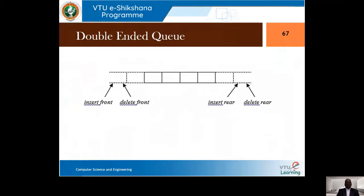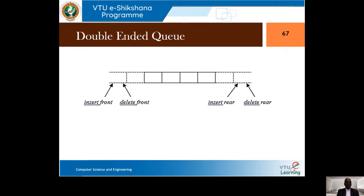We have seen the normal queue where insertion is done at rear and deletion is done at front. We have also seen other types of queues like circular queue, priority queue, etc. Now the double ended queue is one such variety where insertion and deletion happens on either end.